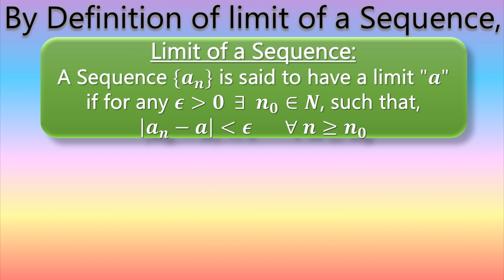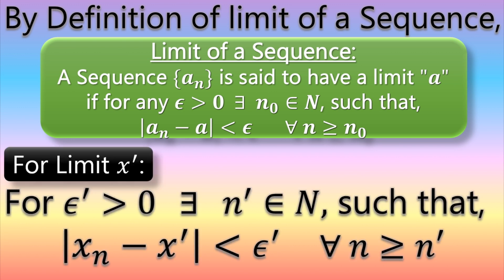For all n greater than or equal to N₀, where epsilon changes with n. Applying this definition to our first limit x': for epsilon' greater than zero, there exists N' belonging to the set of natural numbers such that |xₙ − x'| < epsilon' for all n greater than or equal to N'. Here we change the notation because we have two limits.